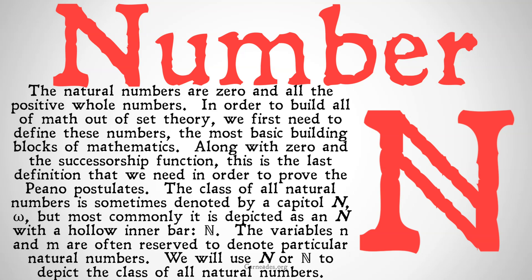Along with zero and the successorship function, this is the last definition that we need in order to prove the Peano postulates. The class of all natural numbers is sometimes denoted by a capital N, a lowercase omega, but most commonly it's depicted as a capital N with a hollow inner bar — this kind of N with that inside hollow bar.